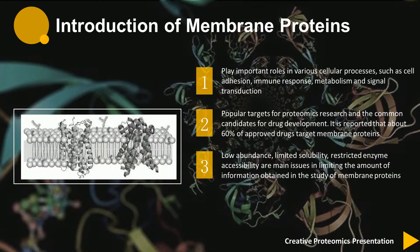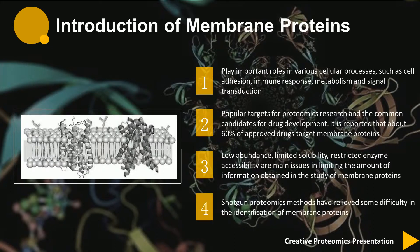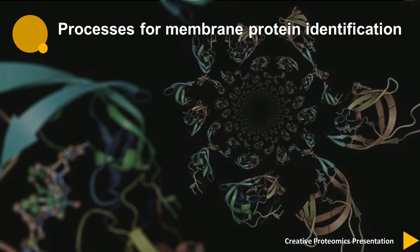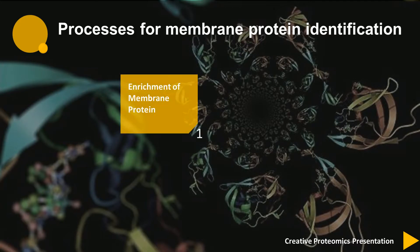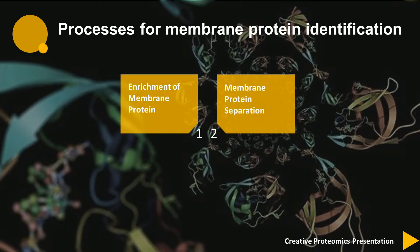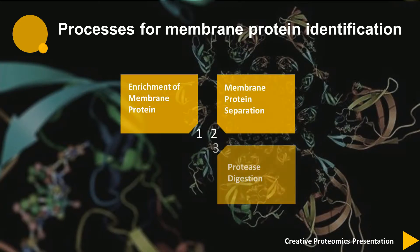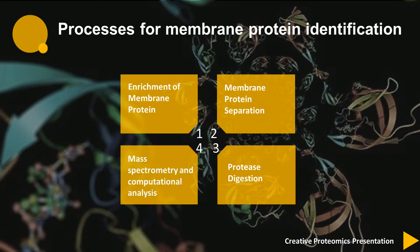Shotgun proteomics methods have relieved some difficulty in the identification of membrane proteins. The main processes for membrane protein identification will be introduced, including enrichment of membrane protein, membrane protein separation, protease digestion, mass spectrometry, and computational analysis.